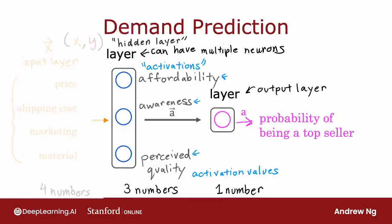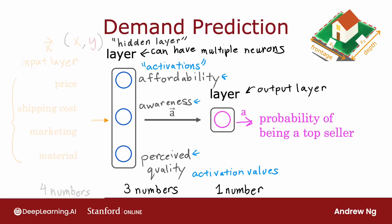So one way to think of this neural network is just logistic regression, but a version of logistic regression that can learn its own features to make it easier to make accurate predictions. You might remember from the previous week a housing example where we took the frontage and the depth of a lot and multiplied them to construct a more complex feature, x1 times x2, which was the size of the lot. That was manual feature engineering. What a neural network does is instead of you needing to manually engineer the features, it can learn its own features to make the learning problem easier for itself.